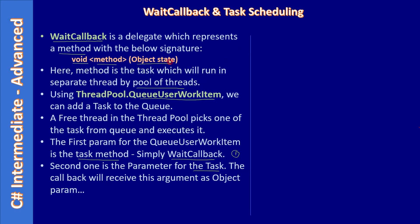From the calling thread you invoke QueueUserWorkItem and the task will run in a separate thread. If you want to supply some parameter or argument to the task, you have to prepare that before submitting the task to the queue, and you can pass that parameter as a second argument to QueueUserWorkItem.